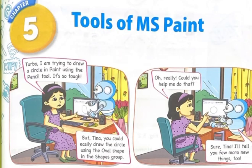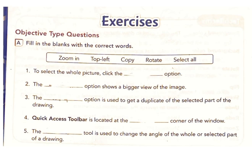Lesson 5: Tools of MS Paint. Exercises - Objective Type Questions. A. Fill in the blanks with the correct words: zoom in, top left, copy, rotate, select all.